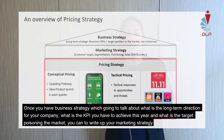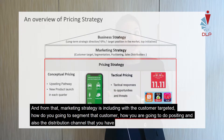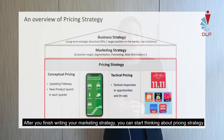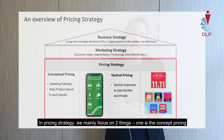From the business strategy, you can start to write your marketing strategy. That marketing strategy includes the customer target, how you're going to segment that customer, the positioning, and also the distribution channel that you have. After you're done writing your marketing strategy, you can start thinking about the pricing strategy.